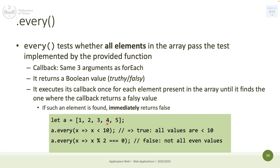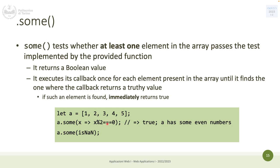'some' is similar to 'every' but checks whether at least one element in the array passes the test. It always returns a boolean, and if it finds a passing element it immediately returns true. So 'every' tests if everything satisfies the condition; 'some' tests if at least one element satisfies the condition. If the first element satisfies it, execution ends after the first element.